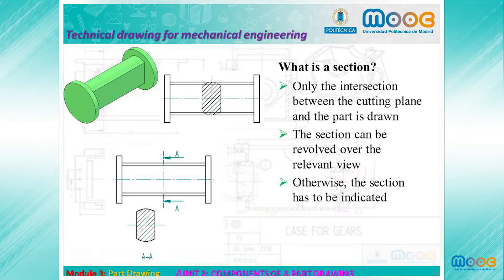How is the sectional view indicated? In the case where the cutting plane coincides with a symmetry plane, indications are not necessary. Otherwise, arrows, letters, and a dotted line — along with any direction change of the cutting line — are required to indicate precisely the path of the cutting plane.